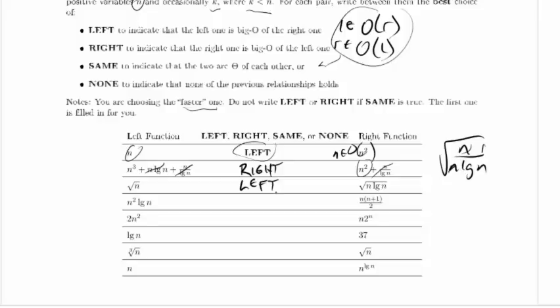n squared log n and n times n plus 1 over 2. Let's just multiply this out, that's n squared plus n over 2, n squared over 2 plus n over 2. This is a low order term, and this is just a constant factor. So n squared versus n squared log n, n squared is going to be faster.